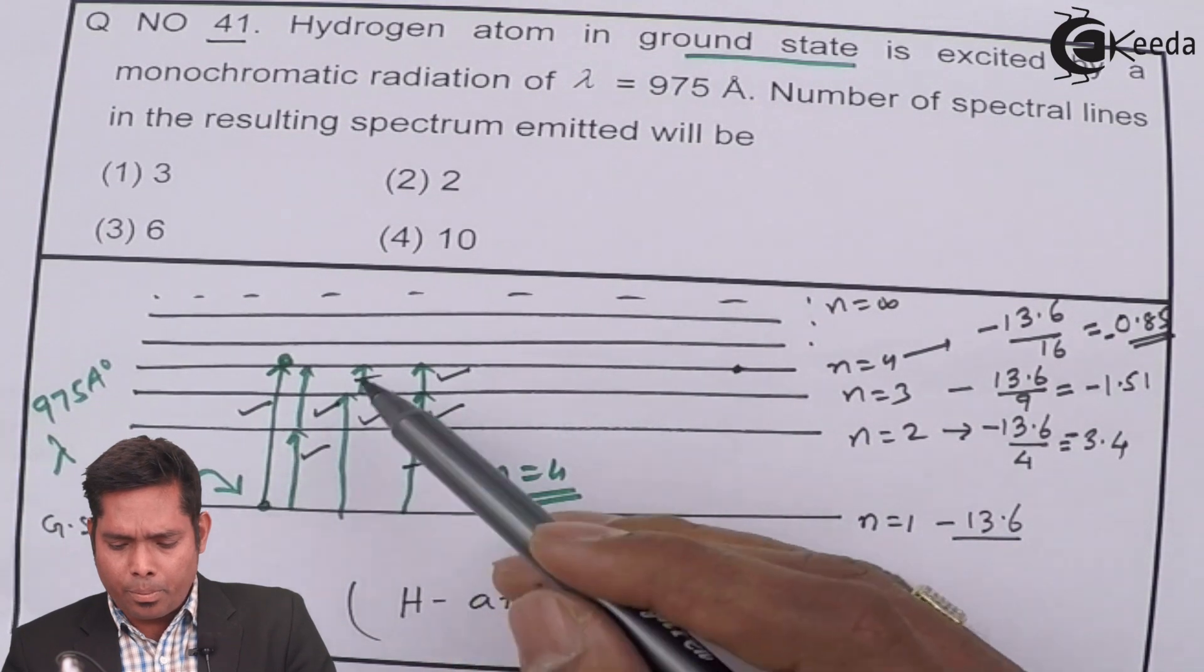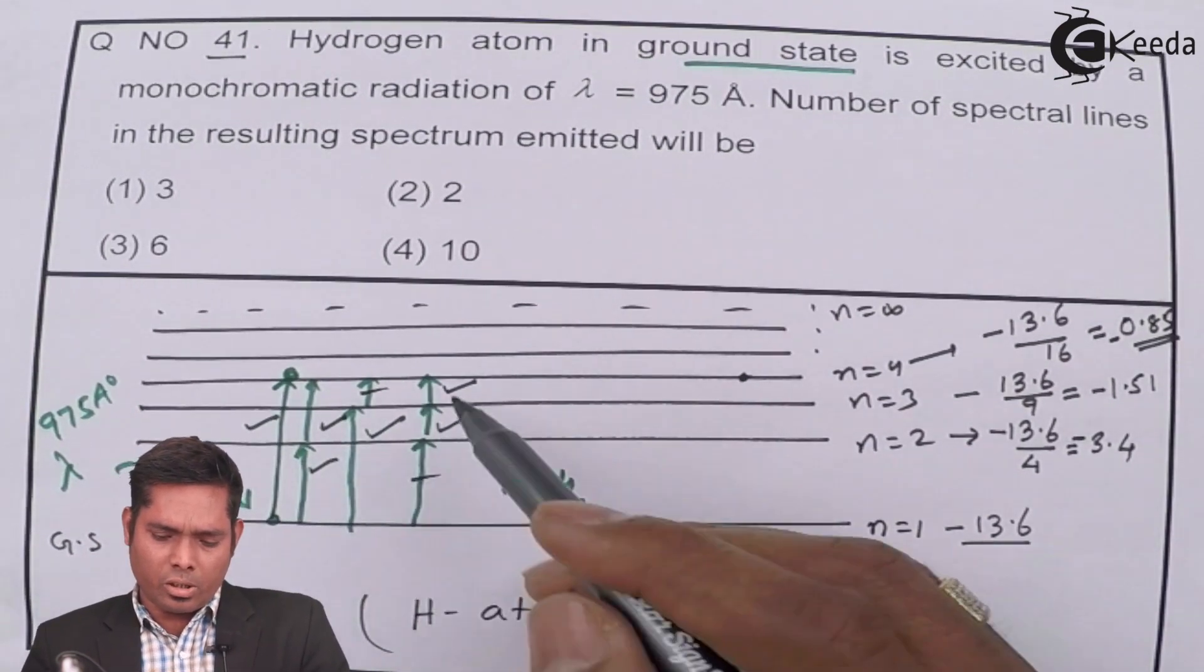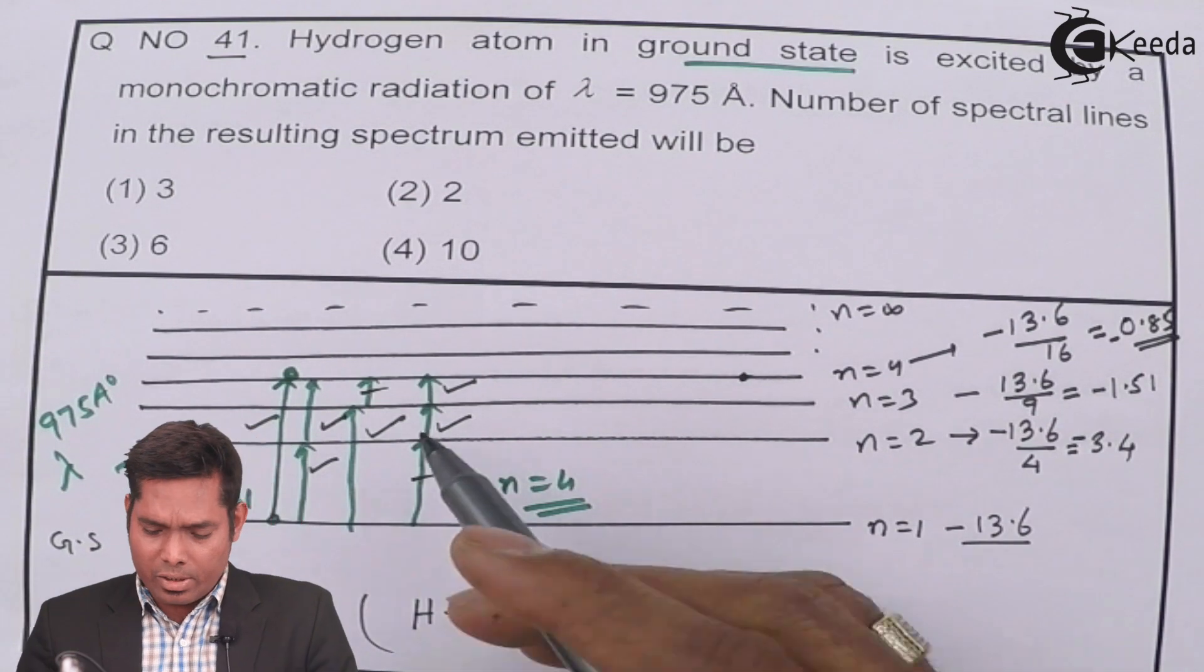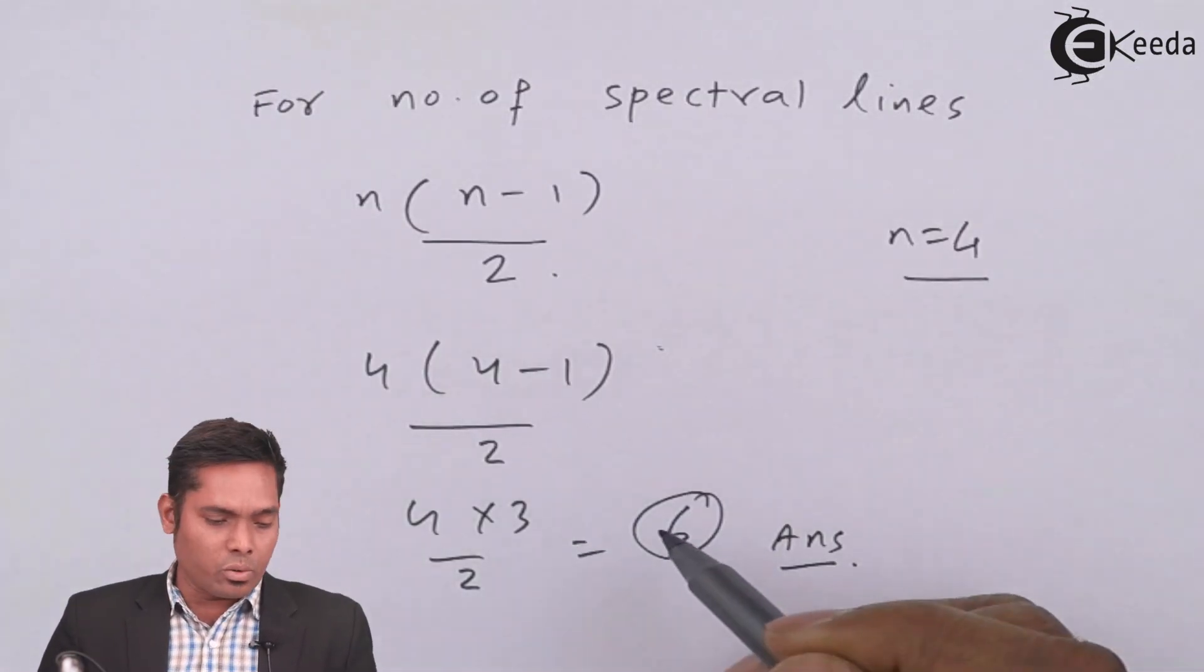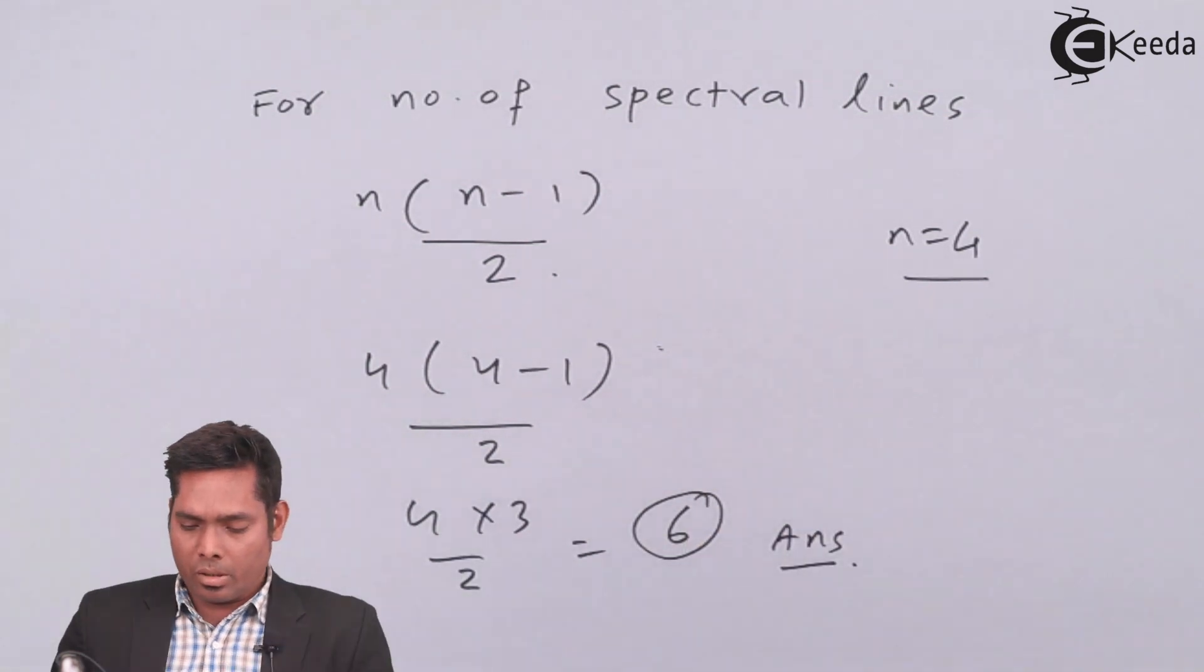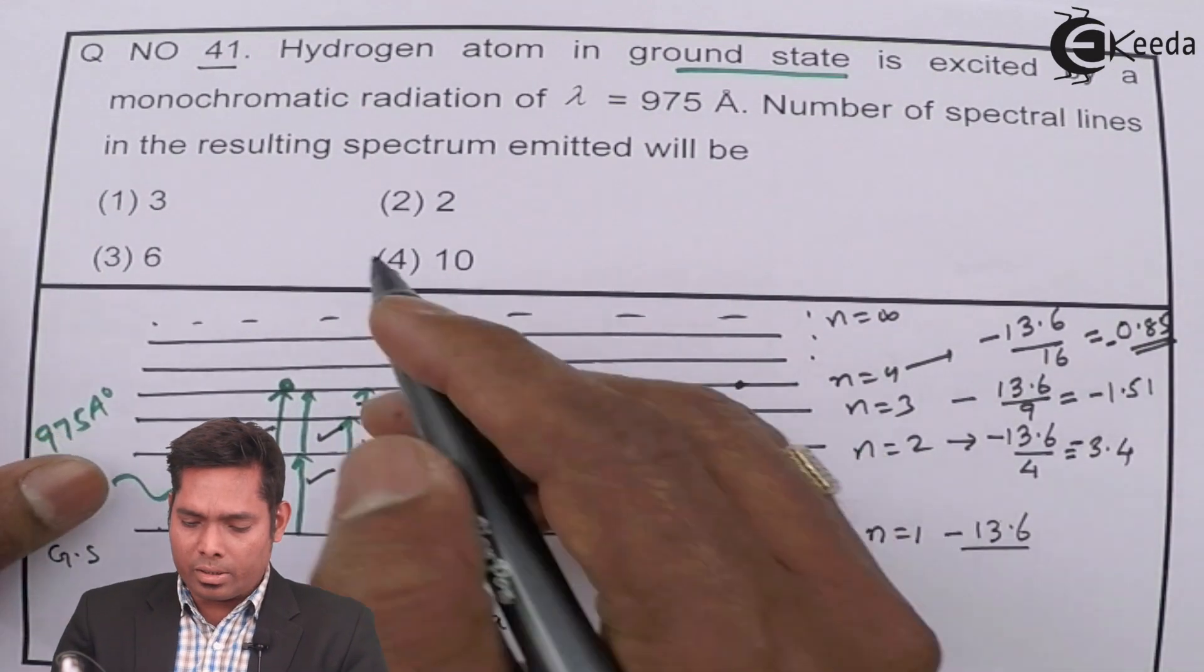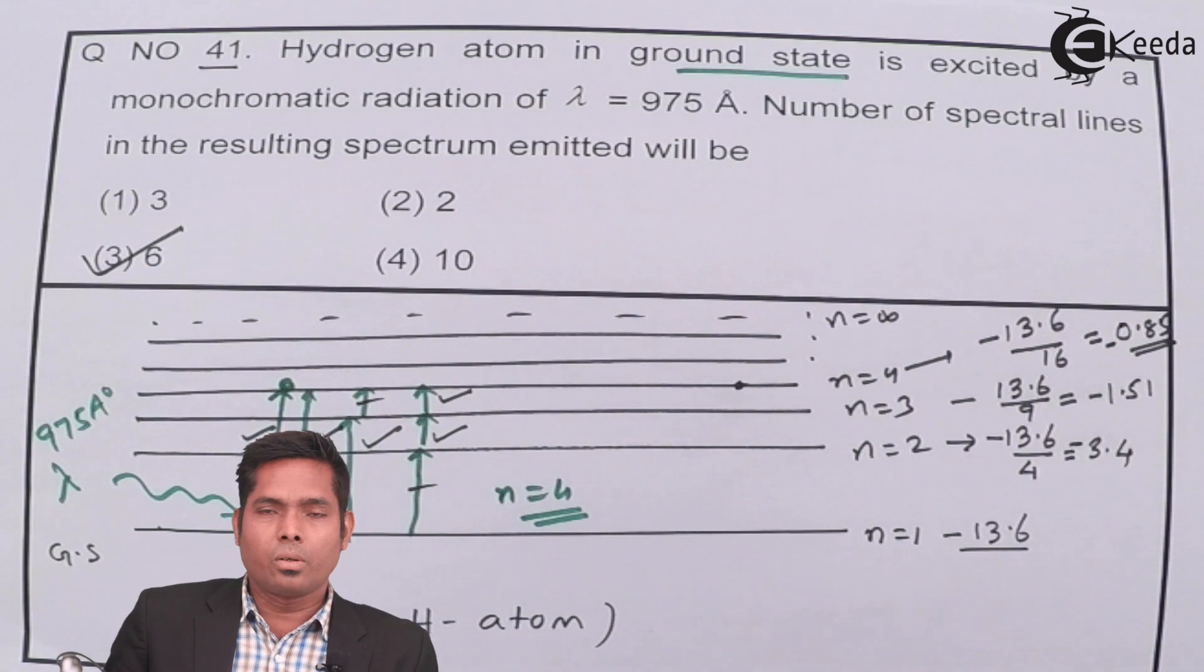But this is the practical. You can see here that this is physically you can see that. These are the things happening. So answer to this question is question number 41. The answer is 6. Thank you.